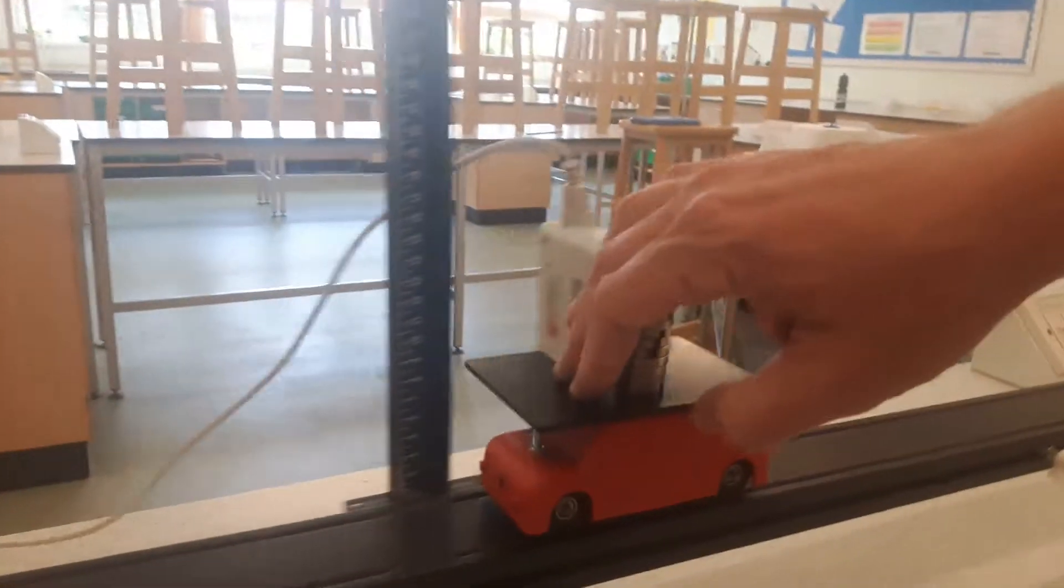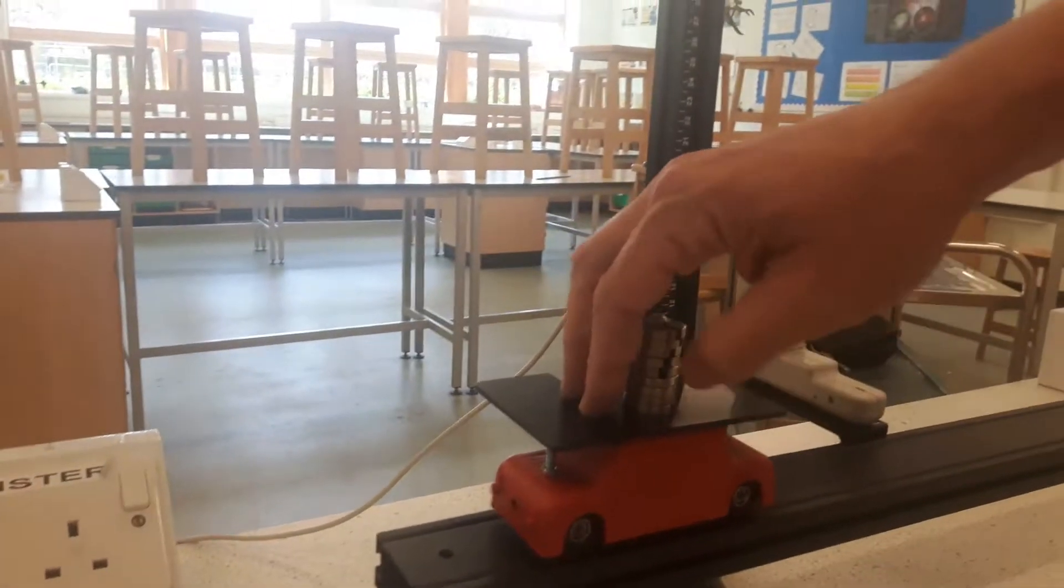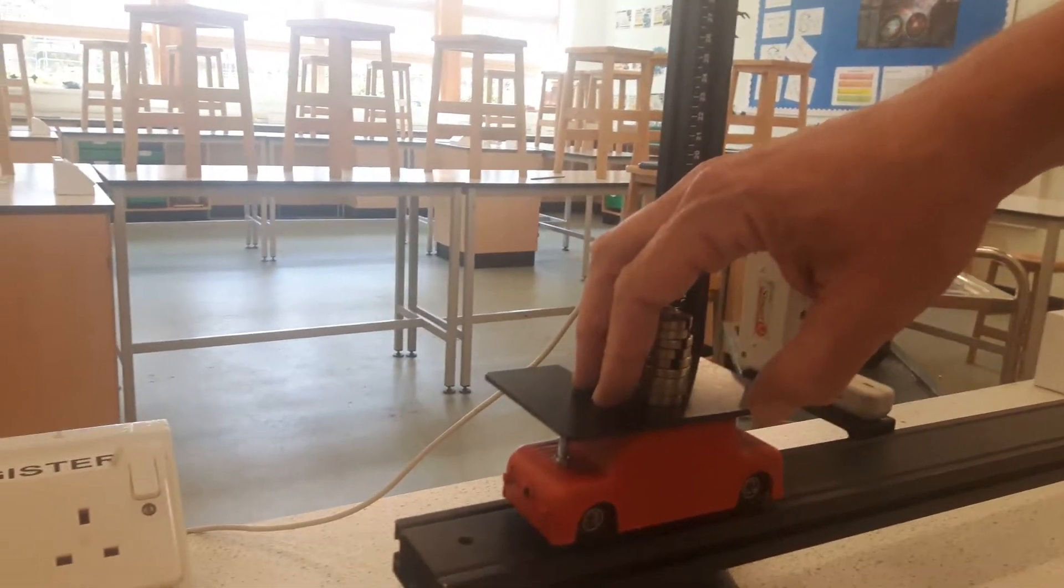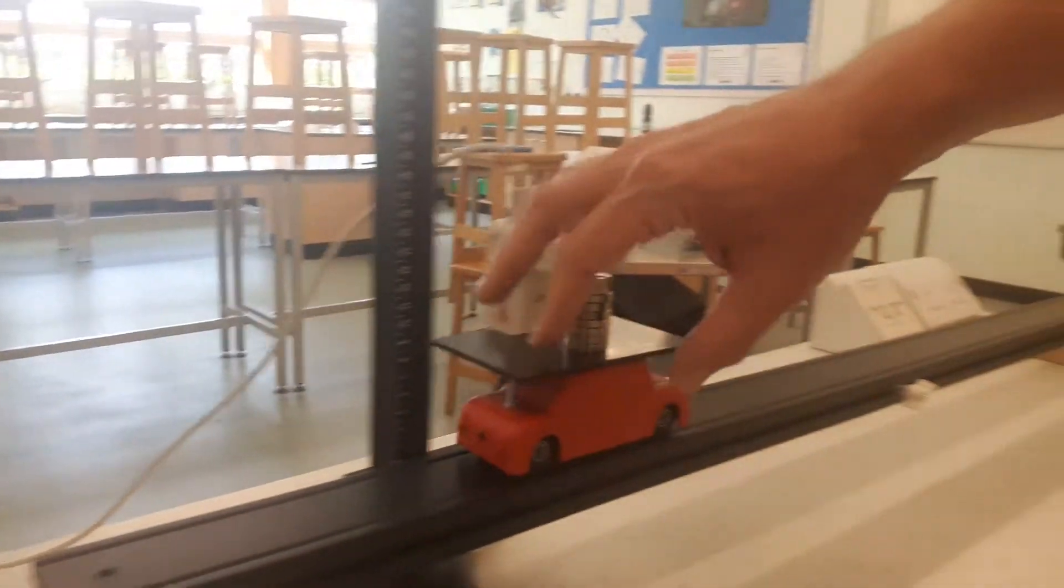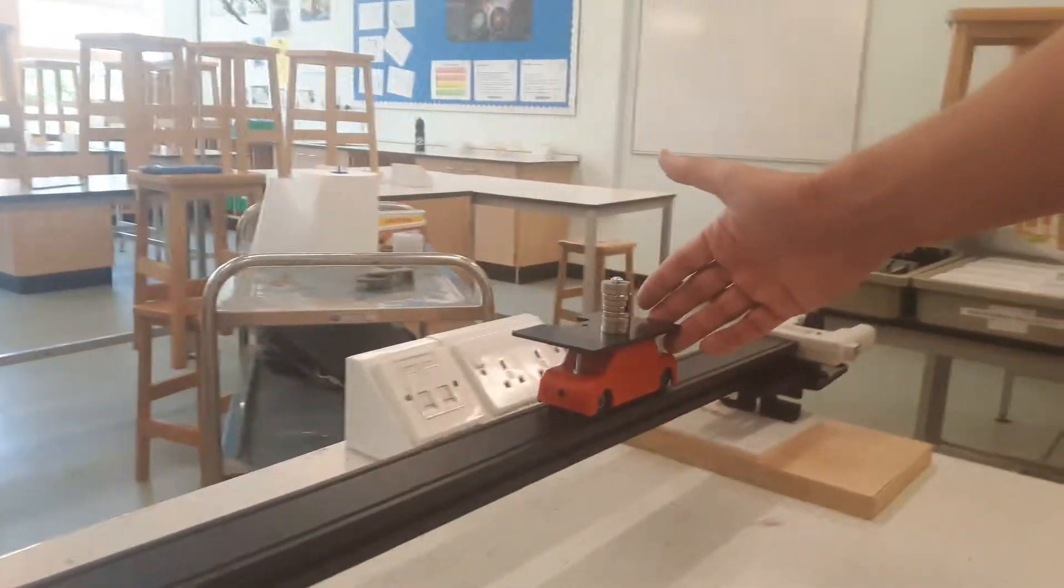Now if the track were horizontal the car would slow down, if the track were too steep the car would speed up. What you want to get is a car that doesn't really speed up or slow down as it goes along.